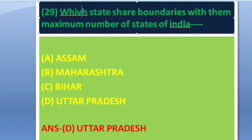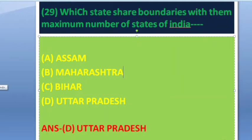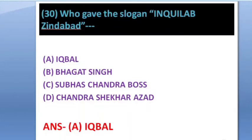Next question: Which state shares boundaries with the maximum number of states in India? This is a most important question. Options: Assam, Maharashtra, Bihar, Uttar Pradesh. The answer is option D — Uttar Pradesh.